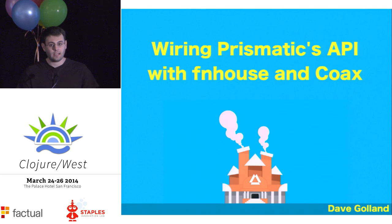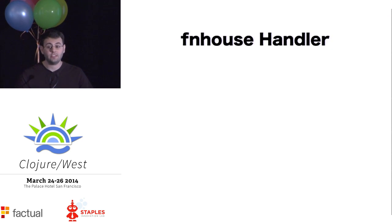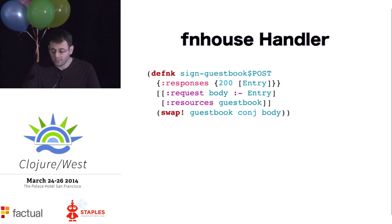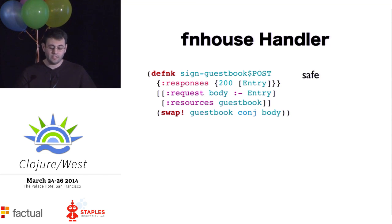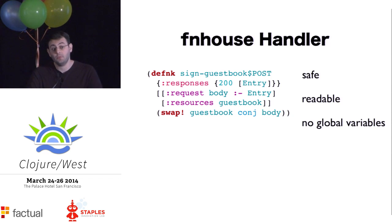Funhaus is a library that allows us to define an API in terms of handlers that look like this. This is a Funhaus handler. It's safe, readable, and has no global variables. Plus, it allows us to do much, much more.